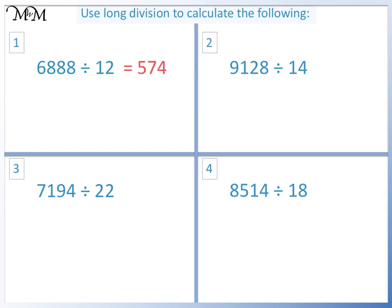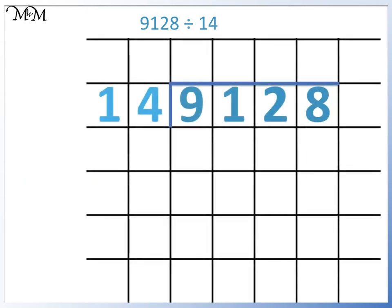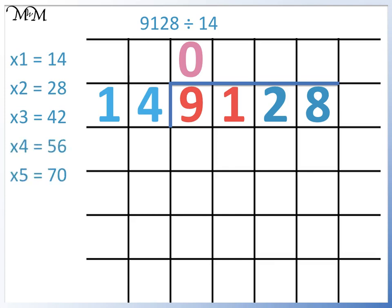Question 2: 9,128 divided by 14. 14 doesn't divide into 9, so we find 91 divided by 14. We'll list some of the numbers in the 14 times table: 14 times 1 is 14, times 2 is 28, times 3 is 42, times 4 is 56, times 5 is 70, times 6 is 84, times 7 is 98 — we have now gone past 91. 84 is the closest to 91 without going past it.